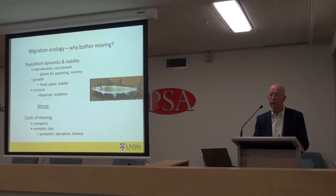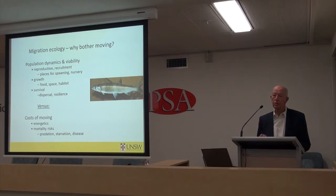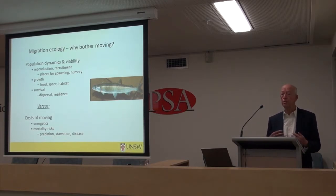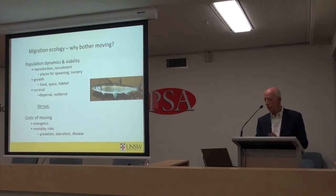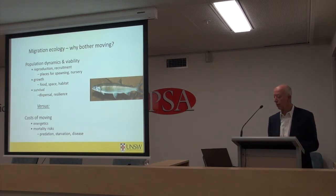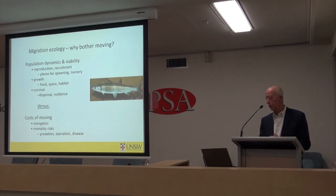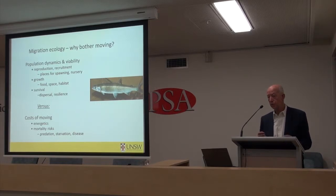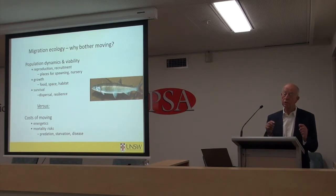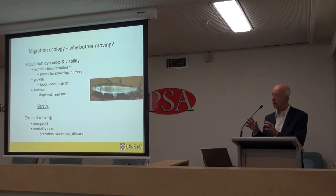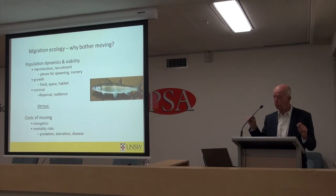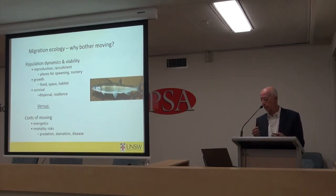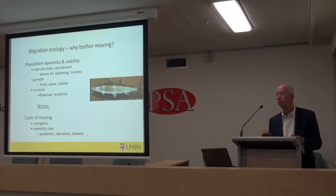So why would fish populations evolve this strong tendency for migration? Why is it important, and what's in it for them? The answers come about through the general topic of population dynamics and population viability. Population dynamics processes are important at three levels. Firstly, it's important for reproduction and recruitment, because the places fish are specialised on for spawning and for nursery habitats are often separate. Newly hatched fish have to move into nursery habitats to grow and become large enough to migrate further into growth habitats.